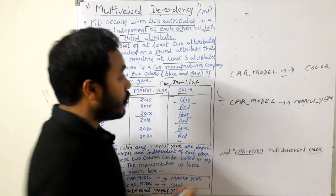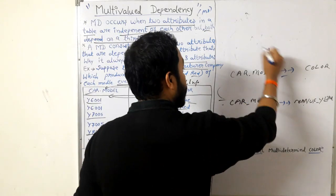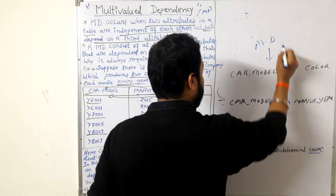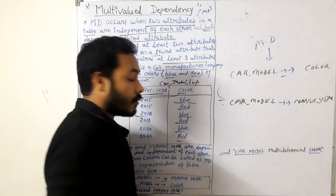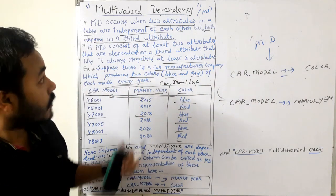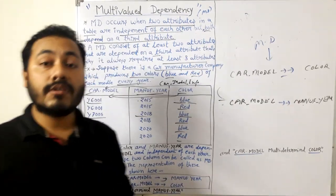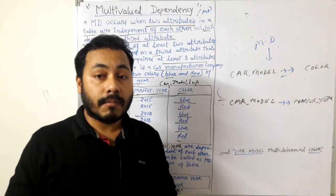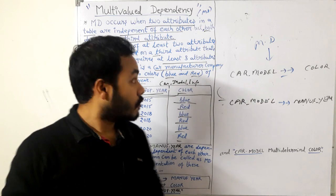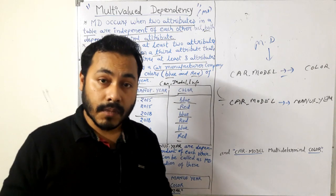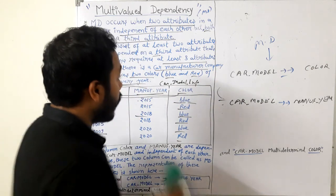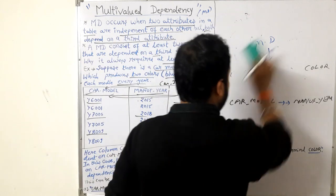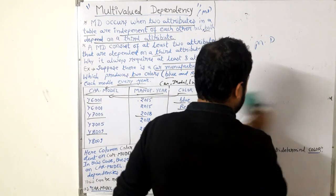To represent multi-valued dependency we are using this symbol. Guys, I hope that this concept of multi-valued dependency is clear to you. Believe me, this is very important because then only you can understand the concept of fourth normal form.